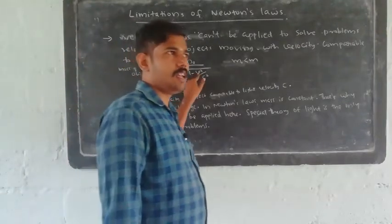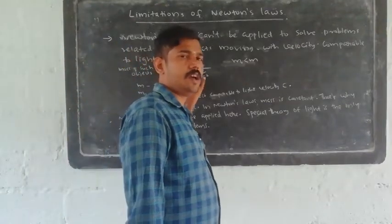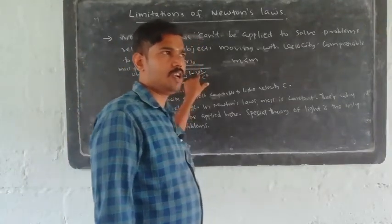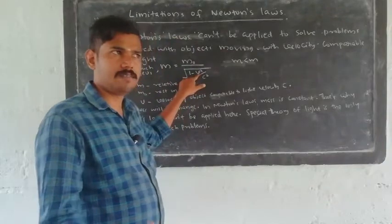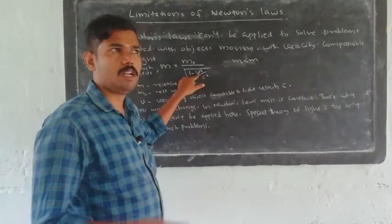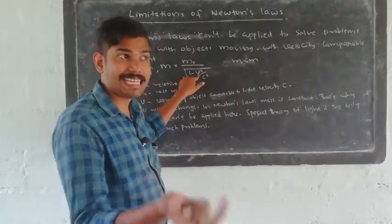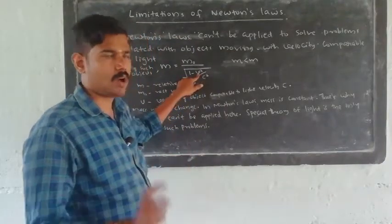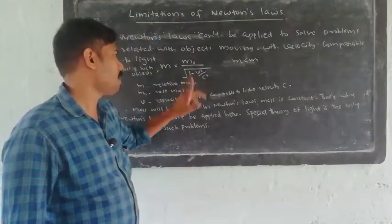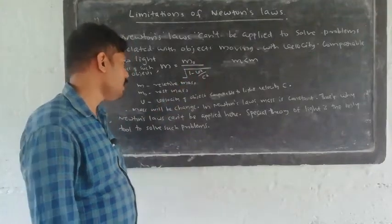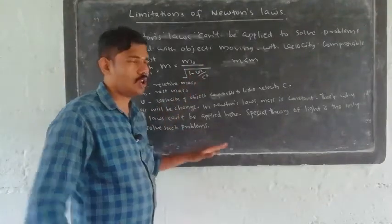When velocity is comparable to the velocity of light — such as 0.5c, 0.75c, or 0.3c — the mass of that object changes.